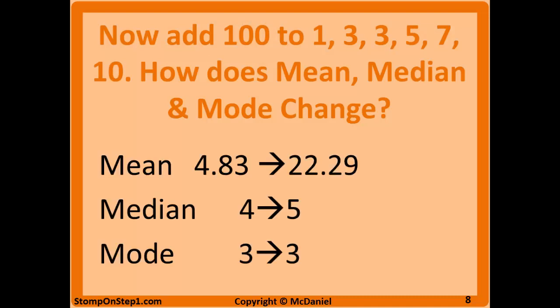You can see that the mean changes a ton. It goes from 4.8, which we calculated before, all the way up to 22. So that's a huge change. The median increases from 4 to 5, and the mode is the same in both cases.